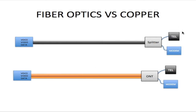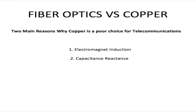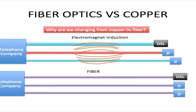So these are two totally different technologies, but in the end you get the same results. Of course, there are many advantages of having a fiber optic line over a copper line, and that's what we're going to be talking about here. There are two main reasons why copper is a poor choice for telecommunications. The first one is electromagnetic induction, and the second is capacitance reactance. On the next slide, we're going to talk about electromagnetic induction first.